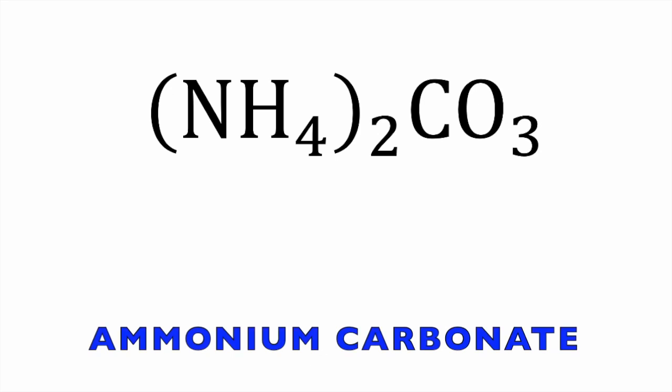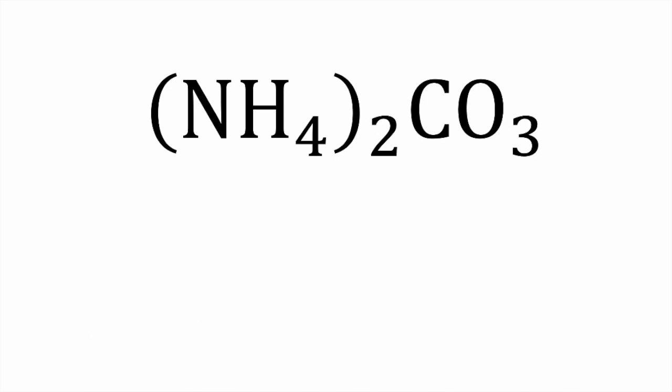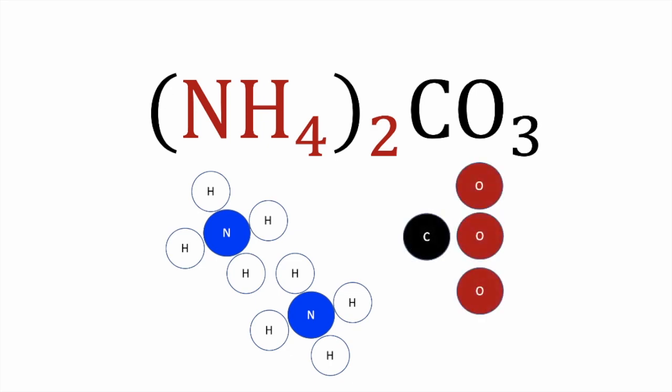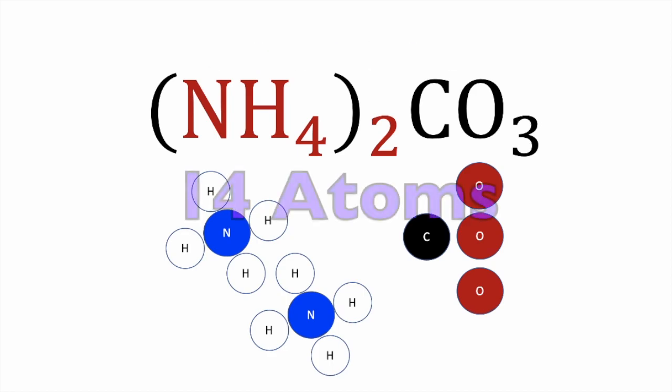Now let's do another example with ammonium carbonate. The chemical formula shows NH4 in parentheses with a subscript 2, meaning we have two of these ammonium groups, plus CO3. Ammonium is the chemical name for NH4, and these atoms are tightly bonded together using covalent bonds. We have two ammonium groups, one carbon, and three oxygens. Totaling up: five atoms from the first ammonium group, five from the second, one carbon, and three oxygens gives us 14 atoms.